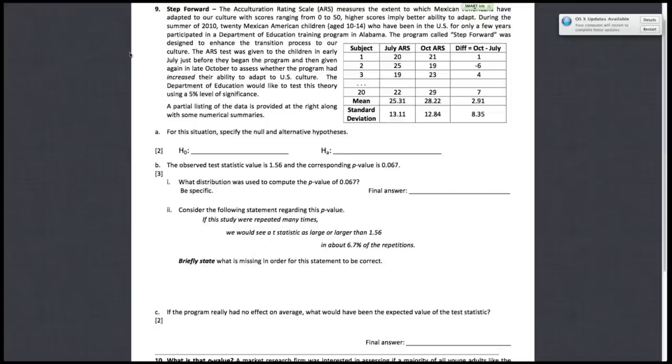So for question A, they just want you to state the null and alternative hypothesis. Since we're taking two measurements for every subject, one in July, one in October, these measurements are paired for each subject, so you're dealing with a paired t-test. For a paired t-test, your null is always mu d equals 0, so the mean difference is 0, and your alternative hypothesis in this case is mu d is greater than 0 because you wanted to assess whether the program had increased their ability to adapt to U.S. culture.